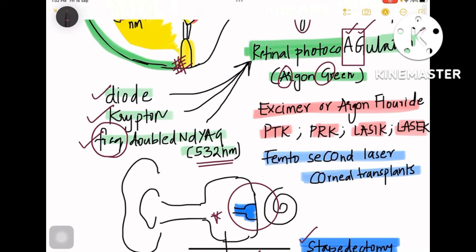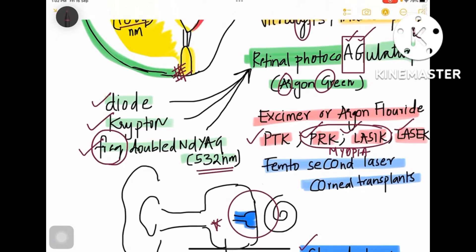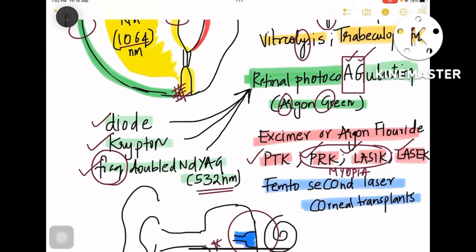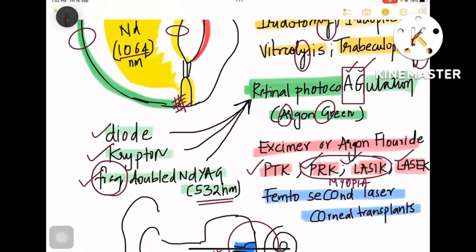Coming to excimer or argon fluoride laser, it is used for PTK, PRK, LASIK, and LASEK. So PTK and PRK are phototherapeutic keratectomy and photorefractive keratectomy. When they ask you in a question about what is the surgical correction of myopia, your answer should be excimer or argon fluoride, because PRK and LASIK are the surgeries done for myopia.